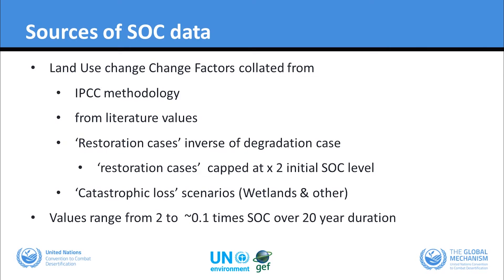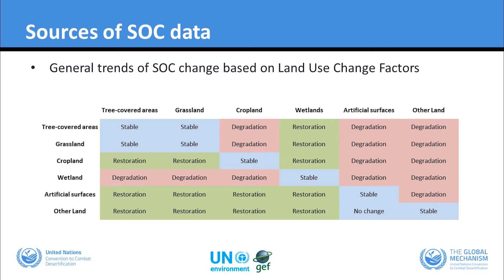Catastrophic loss scenarios cover cases where land cover moves from, say, forestry into bare lands, and also for wetlands. The value ranges for these change factors are from two — twice the initial carbon stock level — down to 0.1, representing a 90% loss level. This is applied over a 20-year duration or the duration that the change is detected. The direction of the trend on the carbon stock for our land cover change matrix is indicated by color.